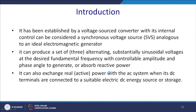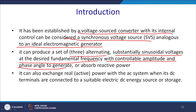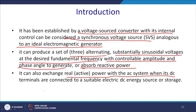It has been established that a voltage source converter with internal control can be considered as a synchronous voltage source, analogous to an ideal electromagnetic generator without any rotating part and thus without any inertia. It can produce a set of three alternating sinusoidal voltages at the desired fundamental frequency with controlled amplitude and phase angle, and can generate or absorb real or reactive power. It can also exchange real power with the AC system when its DC terminals are connected to a suitable DC energy storage device.